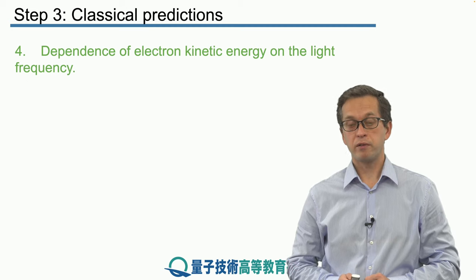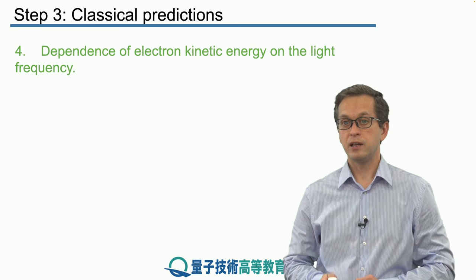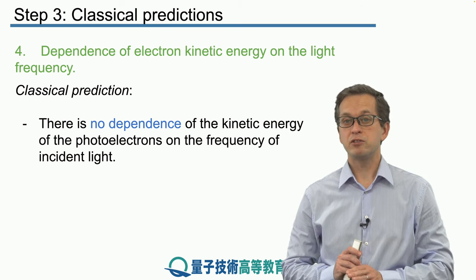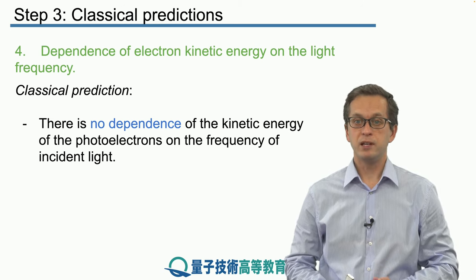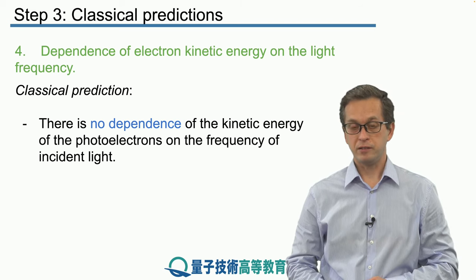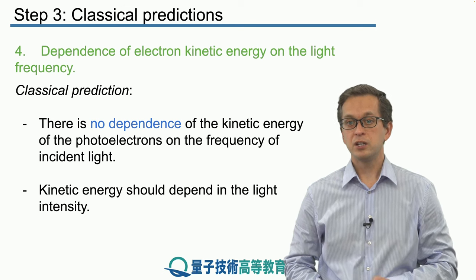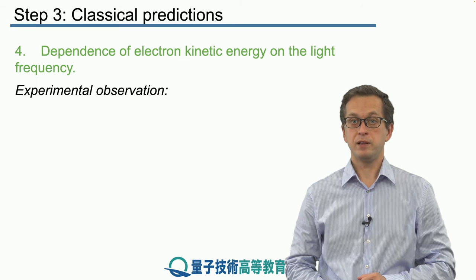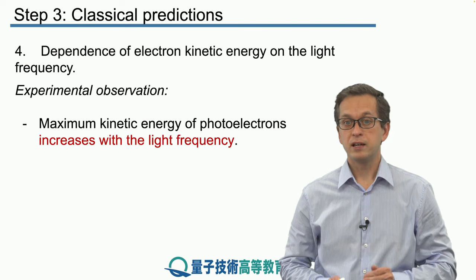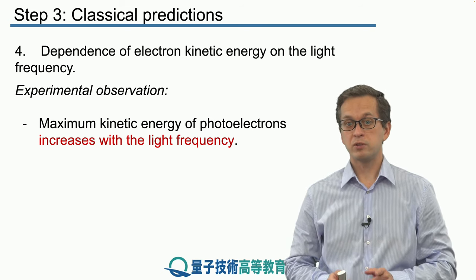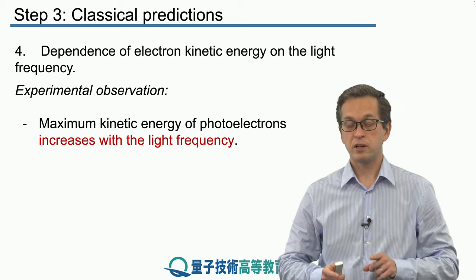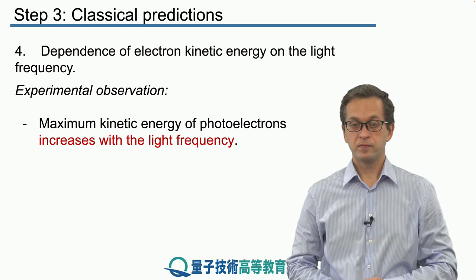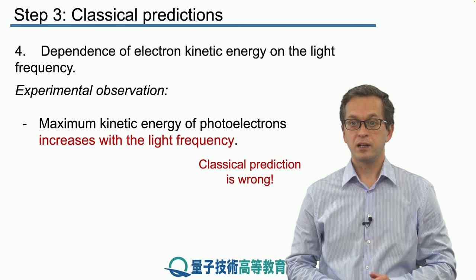Finally, our fourth observation: the dependence of electron kinetic energy on light frequency. Classical theory tells us there is no dependence between the kinetic energy of the photoelectrons and the frequency of the incident light — this kinetic energy should depend on light intensity, as we commented in observation number one. Experimentally, what do we observe? We observe that increasing the frequency of the incident light increases the maximum kinetic energy. So there is a very clear relationship between the kinetic energy of the ejected photoelectrons and the frequency of the incident light. Again, the classical prediction is wrong.